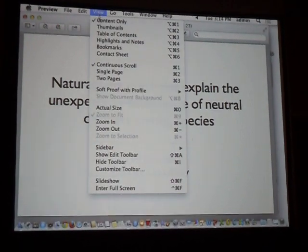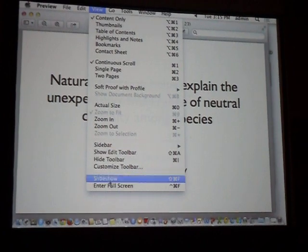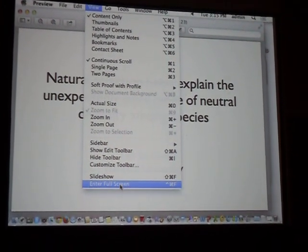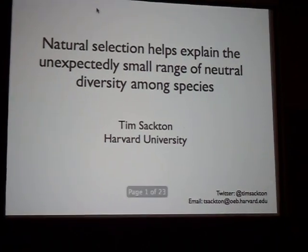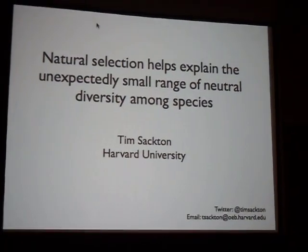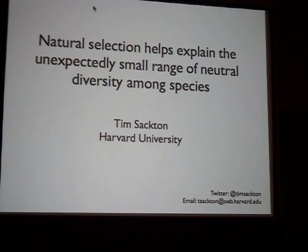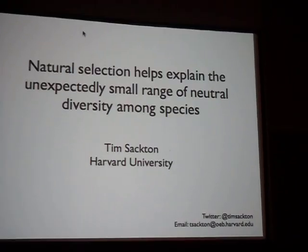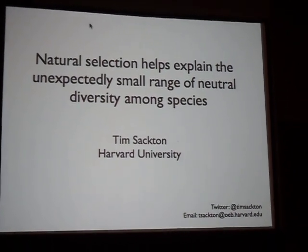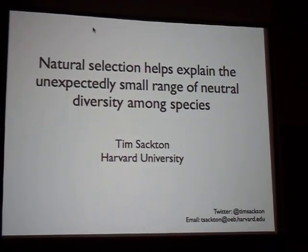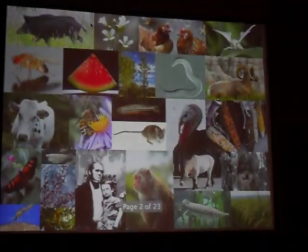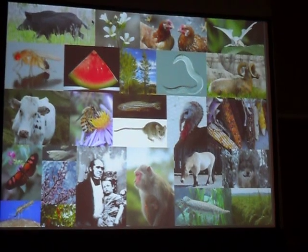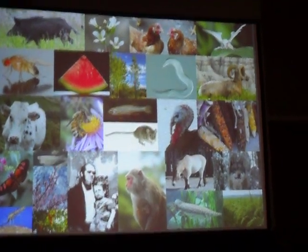Tim Saxton has been talking about natural selection and how it helps explain the unexpectedly small range of neutral diversity among species. What I'm going to be talking about today is some work that I've been doing with my collaborators at Harvard to try and explain why species vary in the amount of neutral diversity within the population.